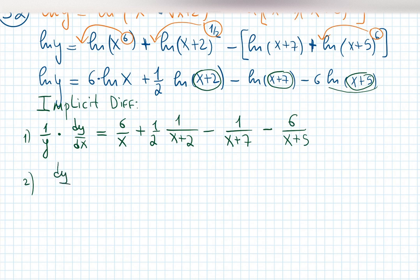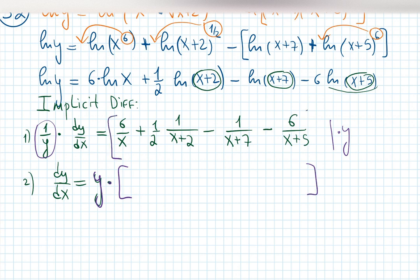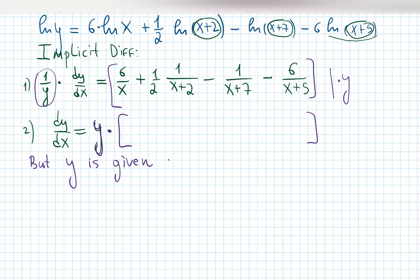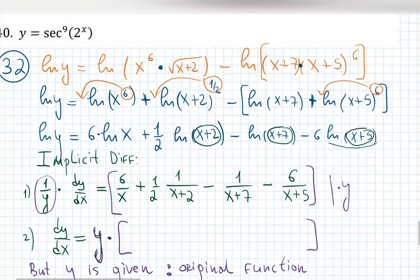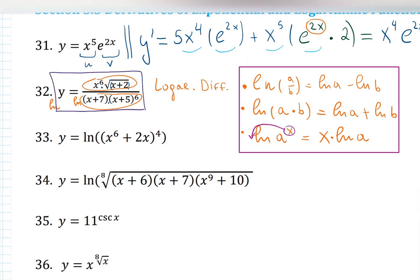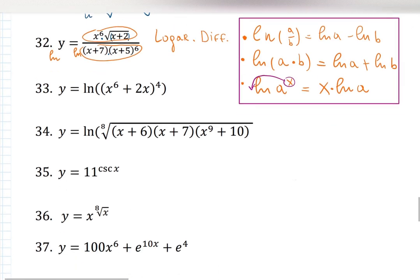We're almost done. The next step of implicit differentiation is to isolate dy/dx. So multiply both sides by y — this y on the left-hand side goes away — giving dy/dx equals y times all those brackets. But y is given! Look at the original function before you applied the log. That y from problem 32 is the original function, so we just reuse it at the end.